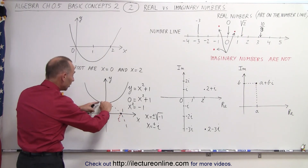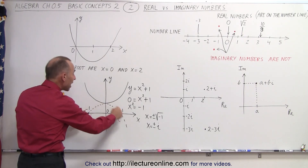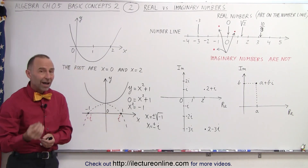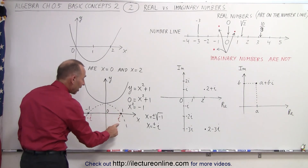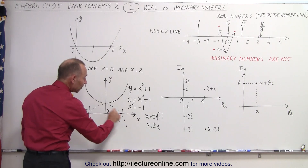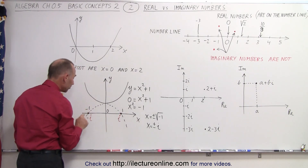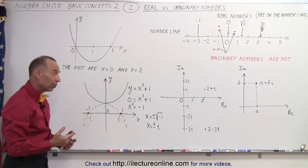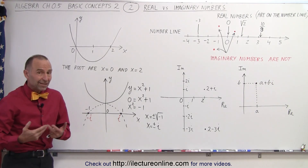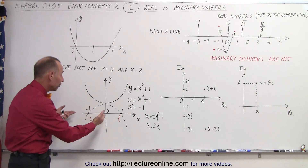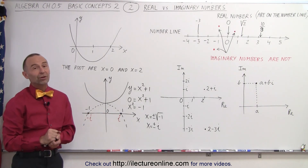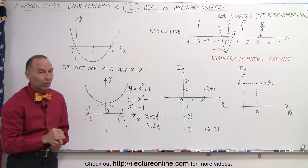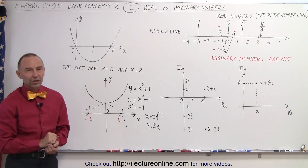We simply take the numbers where the imaginary line crosses the x-axis and multiply by i. So one times i gives us i — that's one imaginary root. Negative one times i gives us negative i — that's the other imaginary root. There are real reasons why we need to deal with imaginary roots and imaginary numbers as well as real ones, and that's how we can tell the difference between real numbers and imaginary numbers.